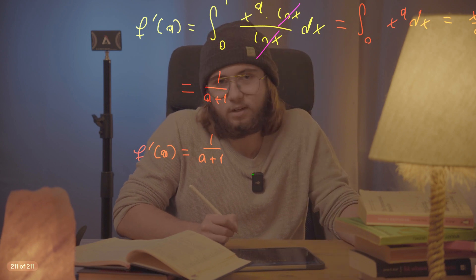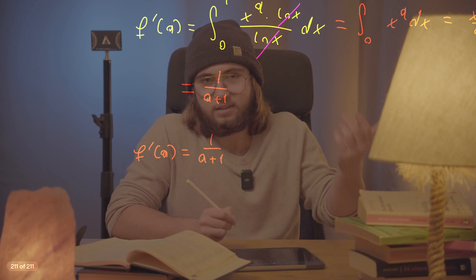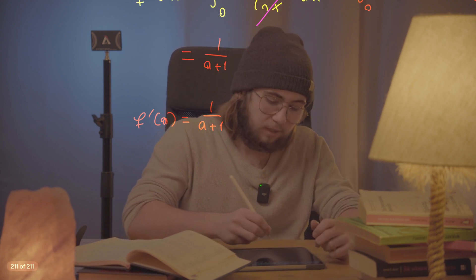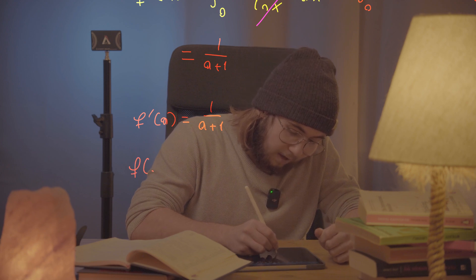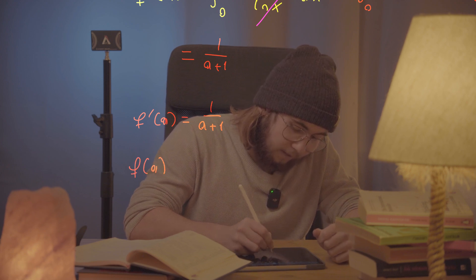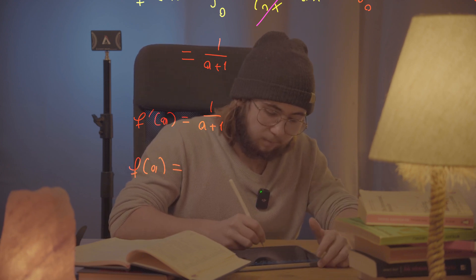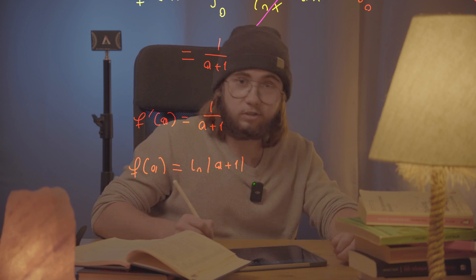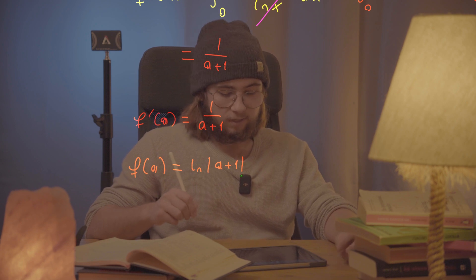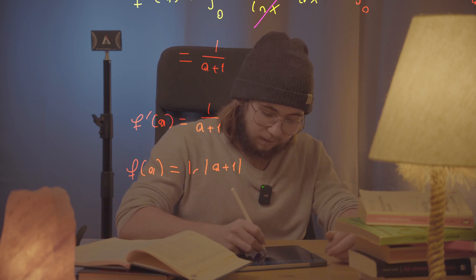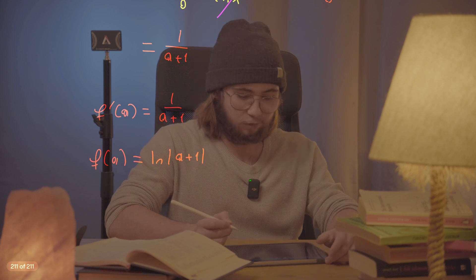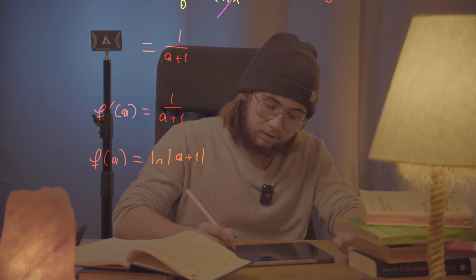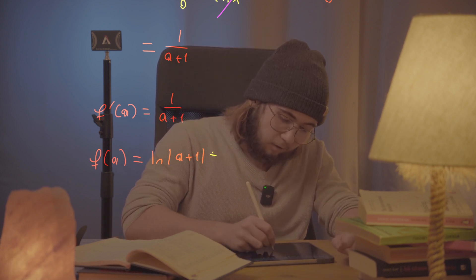Let's integrate both sides — take the anti-derivative of both sides — and what we get is that f(a) itself is equal to the natural log of the absolute value of (a+1), by a simple u-substitution. That's not as hard as the original question. But now we have the problem of adding a constant C, because we're getting a class of functions, not a single function, when we take the indefinite integral.